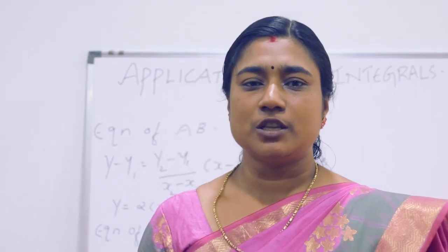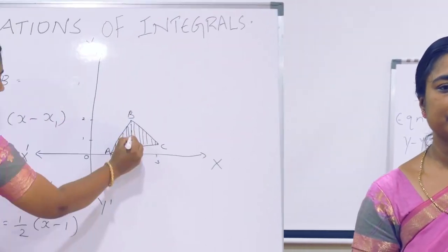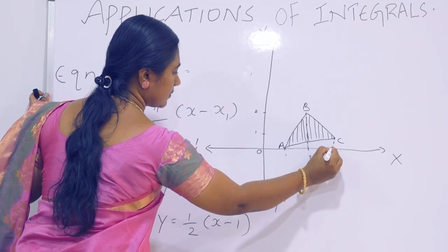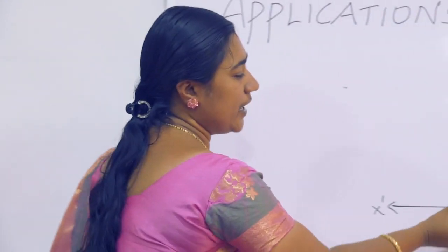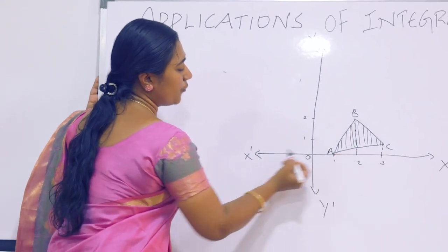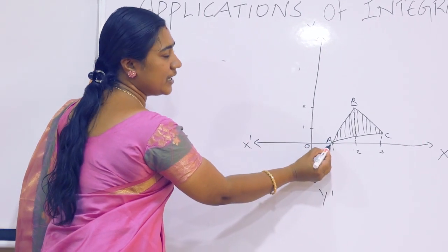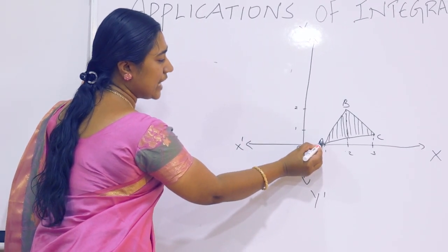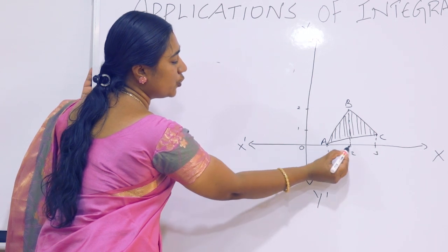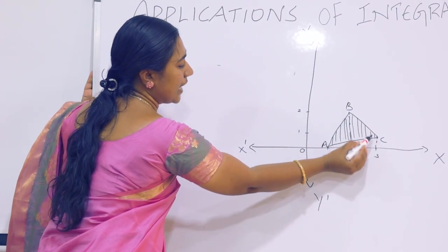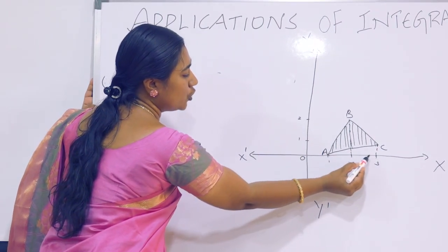Set up the limits of the integral to be calculated. For finding the region of ABC, we are finding the limits. For finding equation of line AB, the limits are 1 to 2. For the equation of line BC, the limits are 2 to 3.